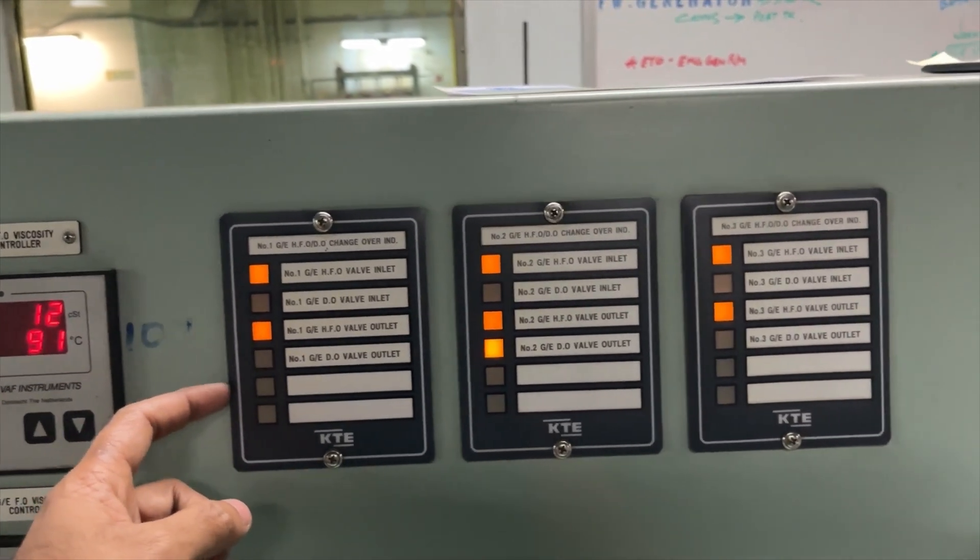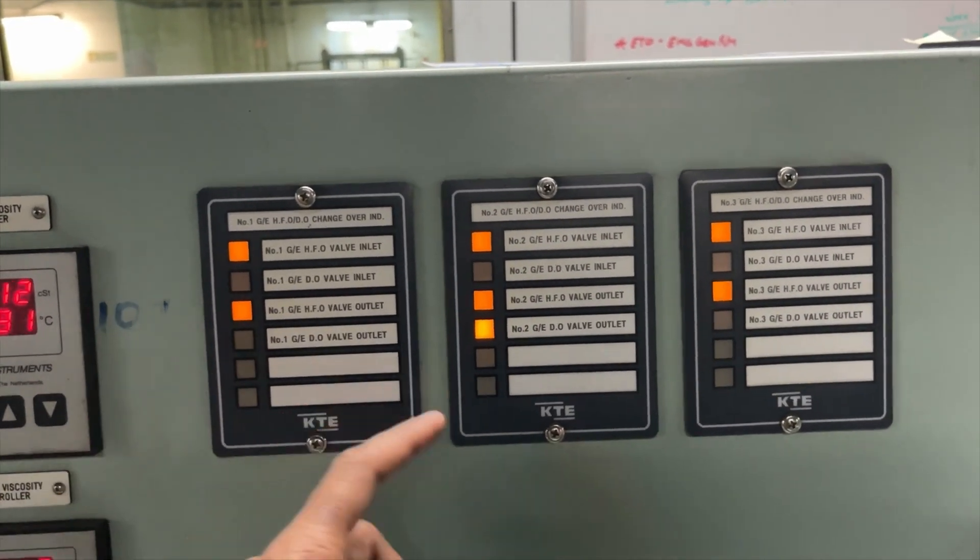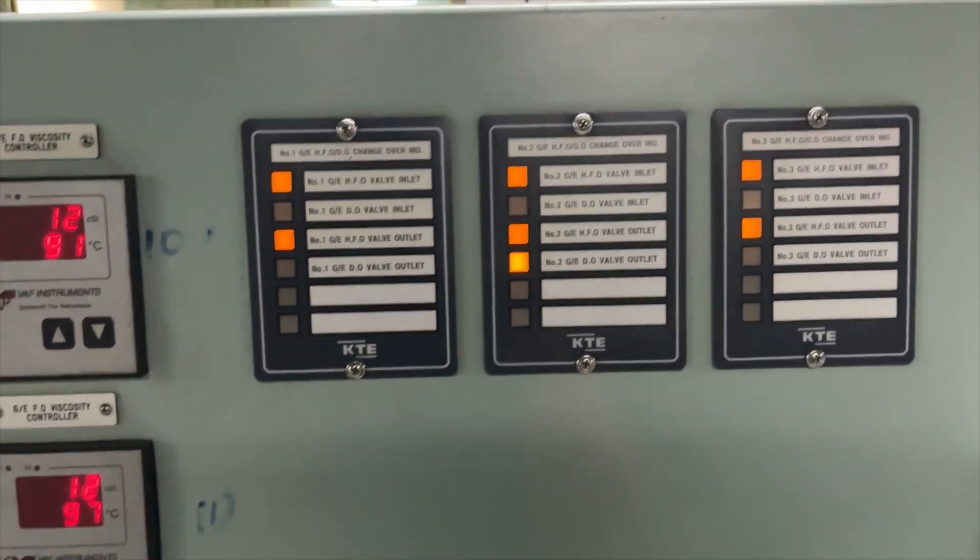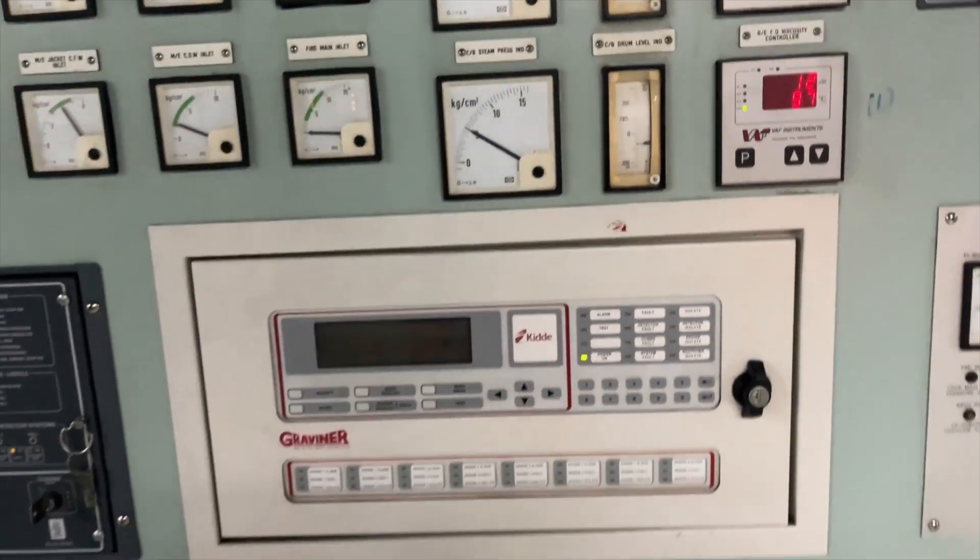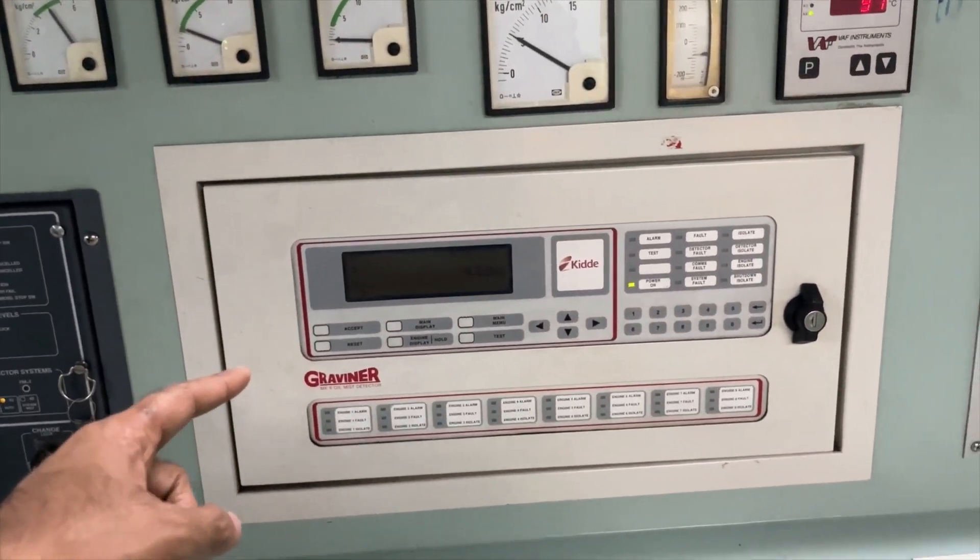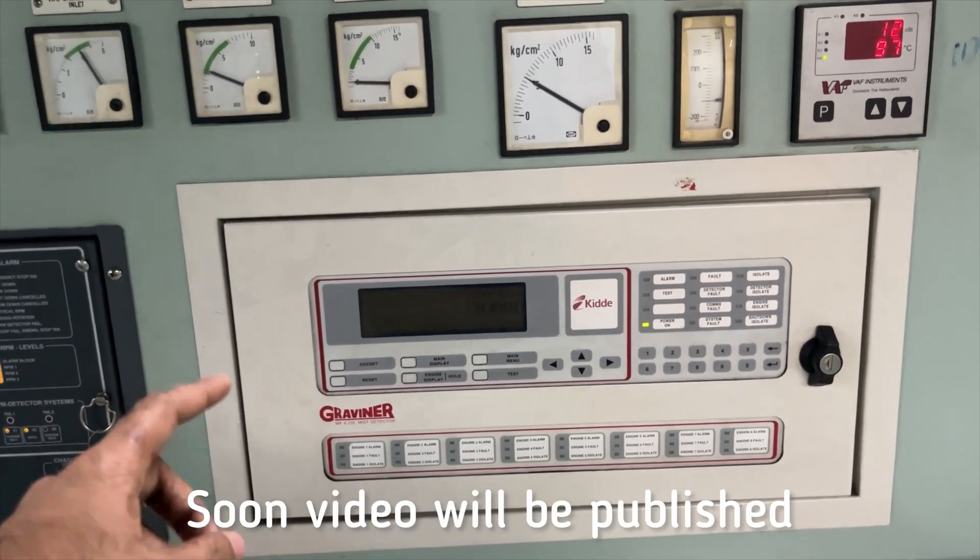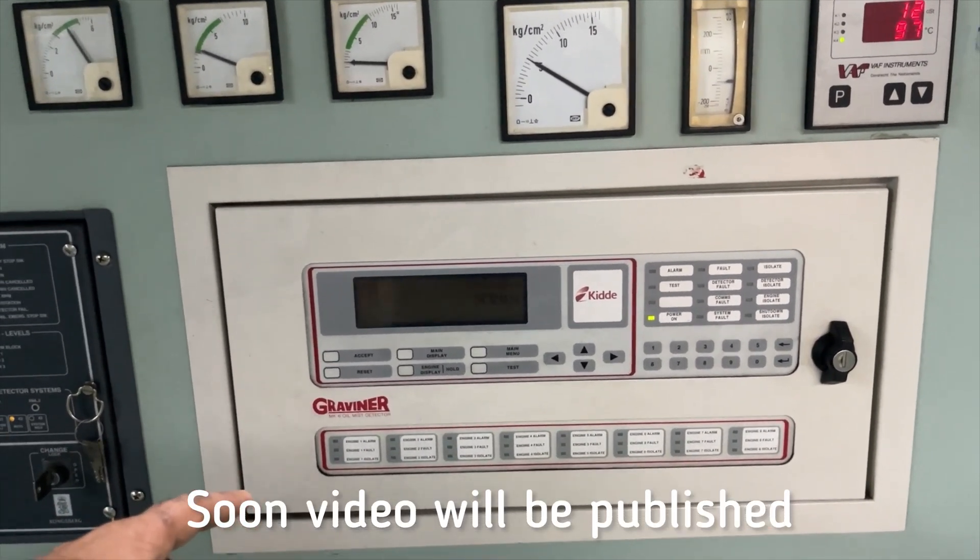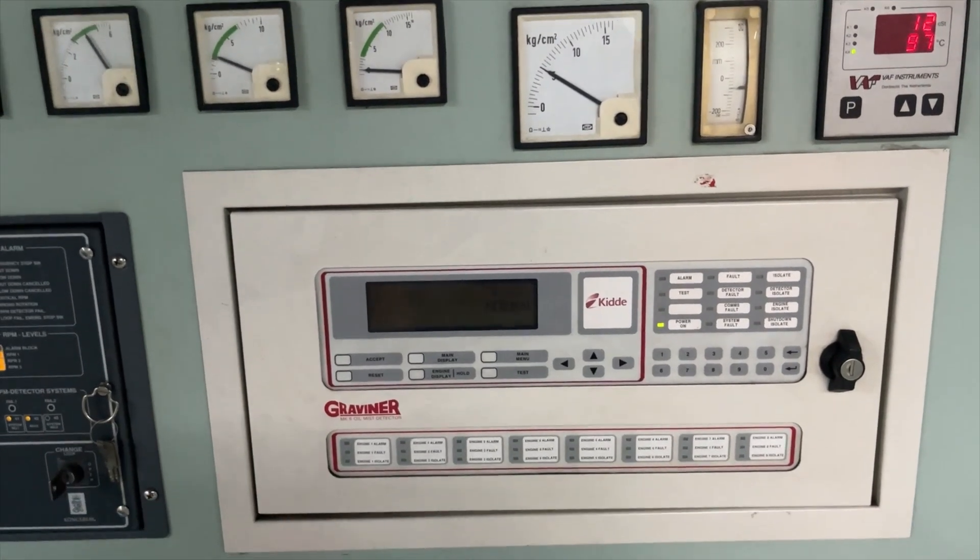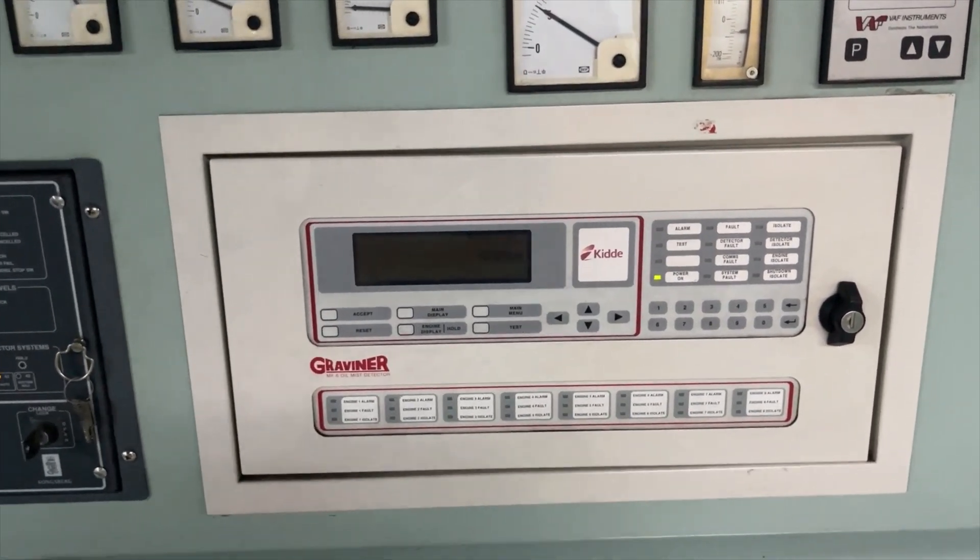And this is the changeover indication for number one, number two and number three DG. This is your oil mist ejector unit. I have made a separate video on this. You can check that.